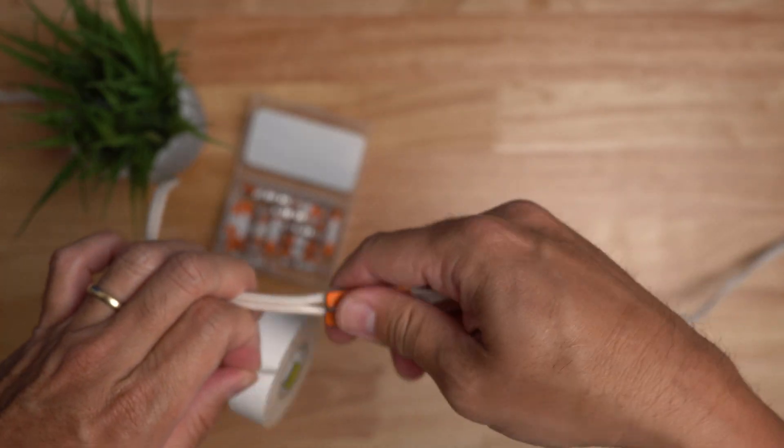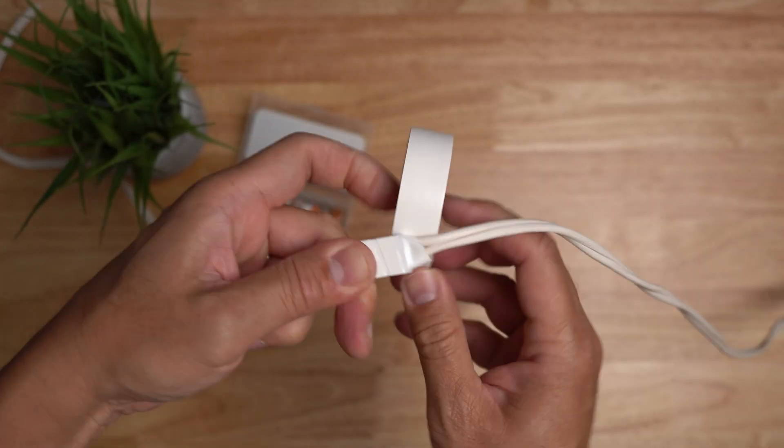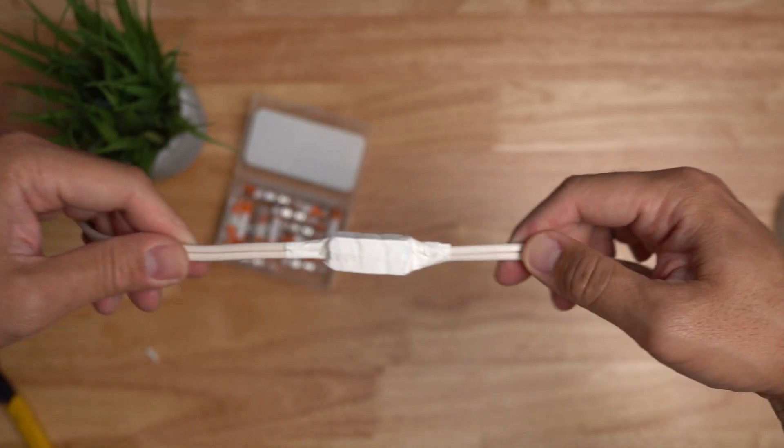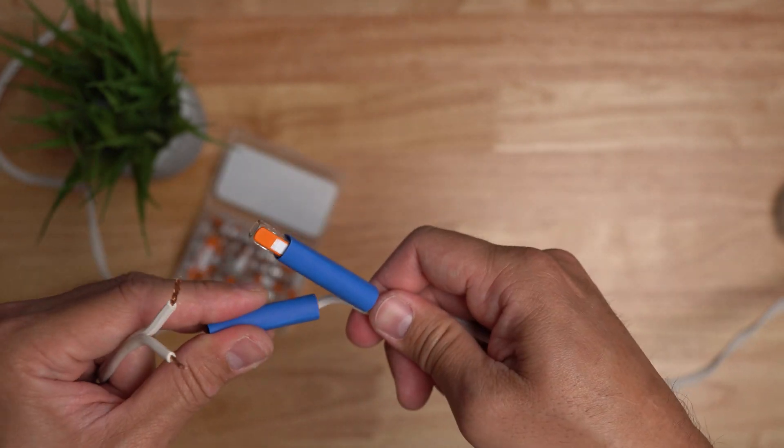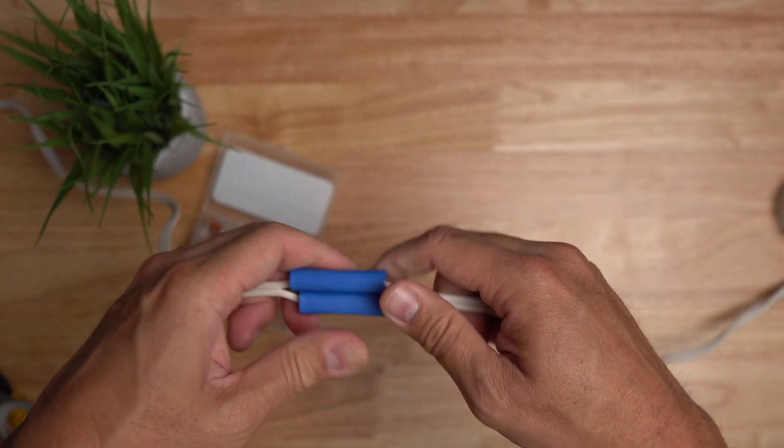To prevent the WAGO levers from opening up, you can wrap the wire and the connectors with an electrical tape. But if you want a more permanent fix and somewhat better and cleaner looking, slide in a couple of heat shrink tubing and heat it up.